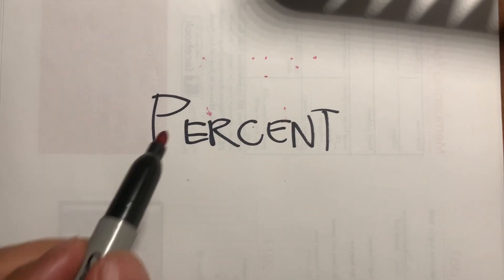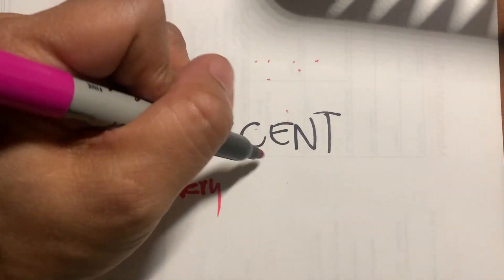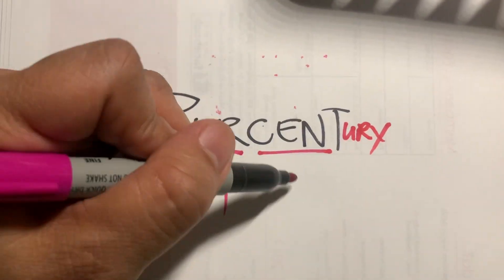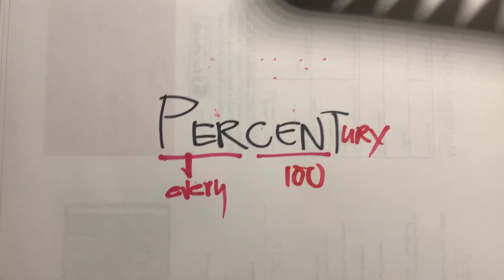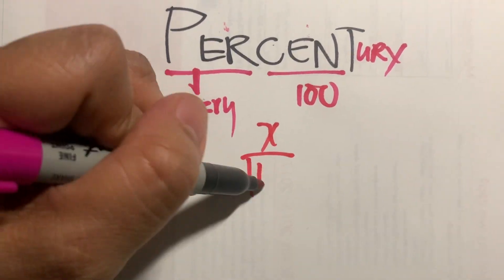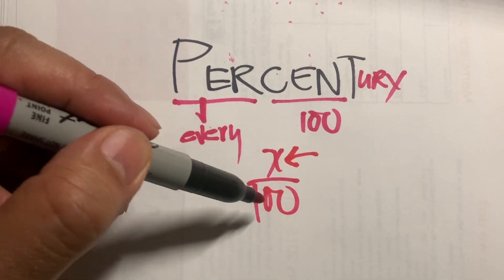Percent is from the root word per, meaning for every cent. Think of it as a century. Century. For every one hundred. So it is something over 100. A percent is this number out of 100.